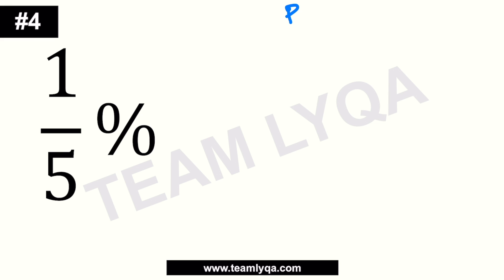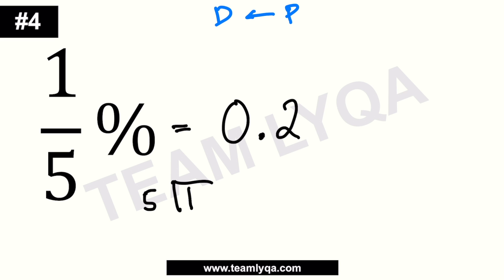Number 4 — it's a percentage again and we're making it a decimal. Same as what we did before: the fraction, we convert to decimal first. 1 over 5 is 1 divided by 5, which is 0.2. If you do long division, 5 doesn't go into 1, so it's 0 point — you make it 10, and 10 divided by 5 is 2. So it's 0.2 percent.